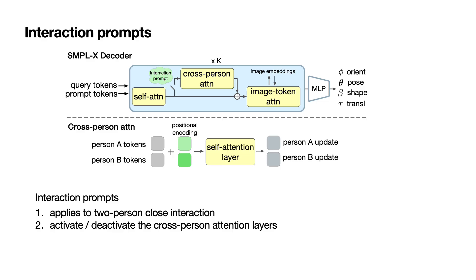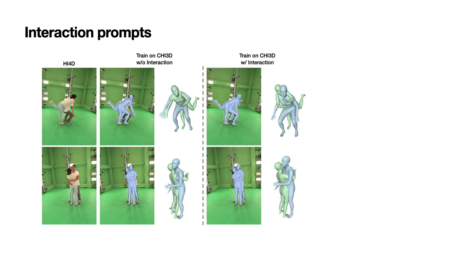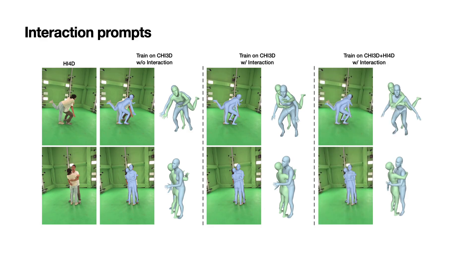We show how we control the interaction layers with the interaction prompt. The interaction prompt is a binary variable and acts like a switch, which turns on the cross-person attention layers when appropriate. We turn on these layers to model two-person interaction in datasets such as HI4D and turn them off in other datasets. Without the promptable interaction layers, training on CHI-3D interaction data does not generalize well to the new HI4D dataset. Adding the interaction layers largely improves accuracy. Combined with training on HI4D data, PromptHMR recovers interactions more accurately.